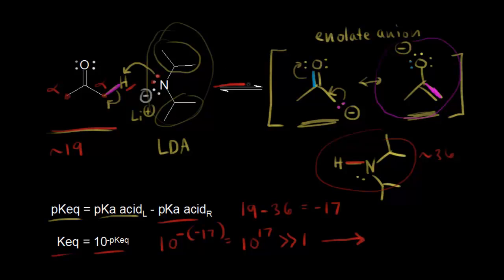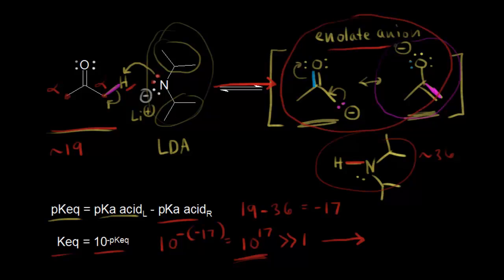The equilibrium favors formation of the enolate anion, and for all practical purposes, this is such a huge number that you're pretty much going to get complete formation of your enolate anion. If you add LDA to acetone, you'll get nearly all enolate anion, and none of your acetone will remain. Another way of figuring that out is to know that the equilibrium favors formation of the weaker acid — the one with the higher pKa. Acetone is more acidic than the amine, so since the amine has the higher pKa, the equilibrium favors formation of this weaker acid, also to the right.